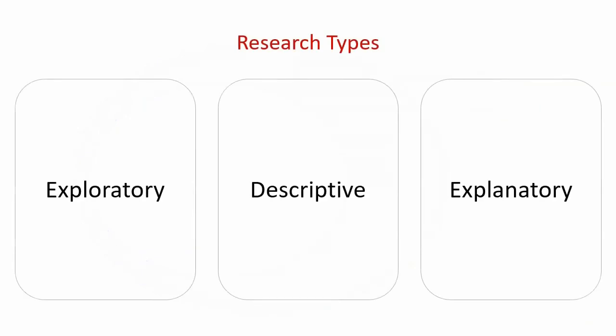There are three research types, namely exploratory, descriptive, and explanatory. It is very common for studies to have elements of more than one research type present; however, you will have a dominant research type. So let's check out the characteristics of each of these.